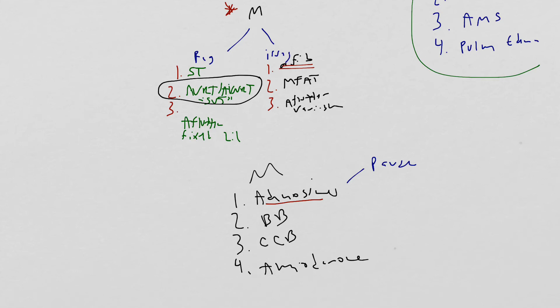Once I know which tachycardia I'm dealing with, then I know how to treat it. For example, if we're dealing with sinus tach, I need to sit back and think, is this a compensatory response to an underlying infection or an underlying hypovolemic event? If so, then you end up treating that. Get fluids, antibiotics, etc.